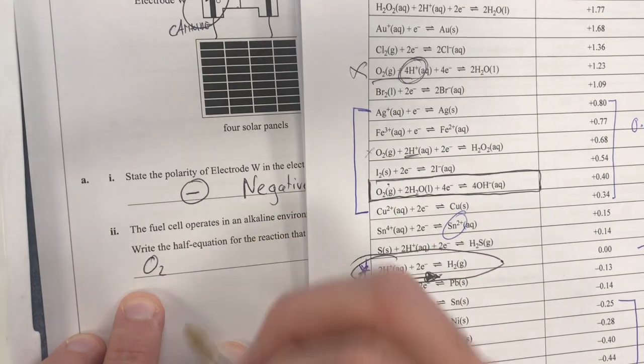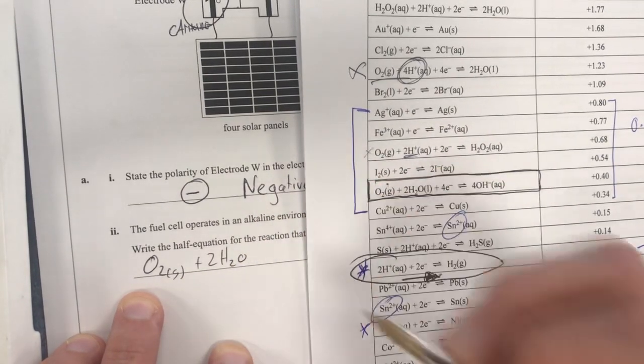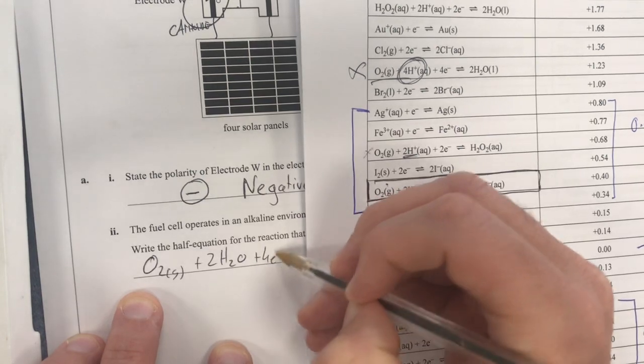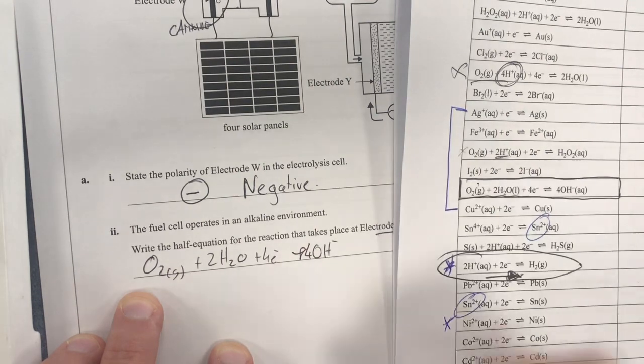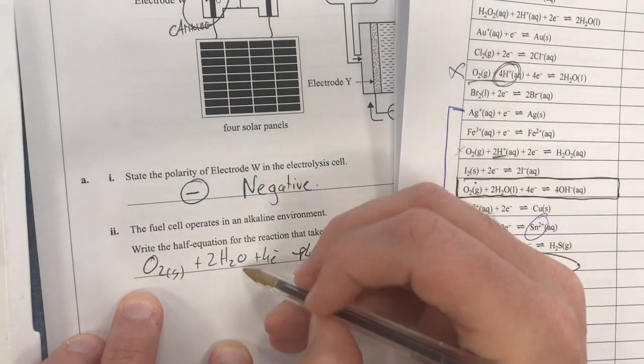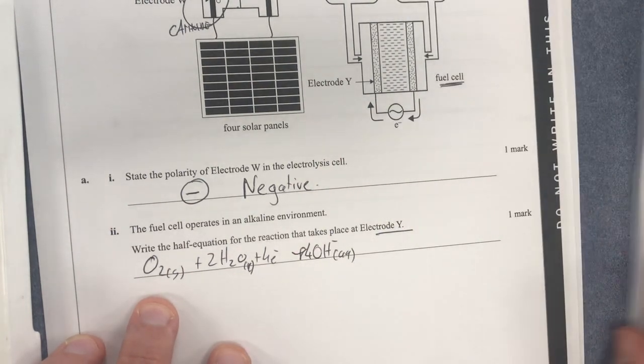So O2 gas plus 2H2O plus 4 electrons negative, and that's going to form 4OH negative. And that's going to be aqueous. That's going to be liquid.